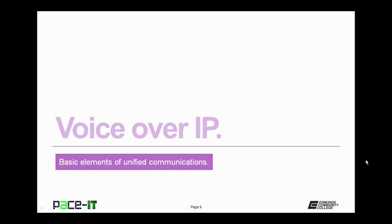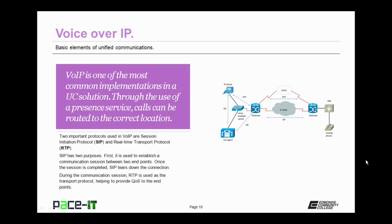Now let's move on to voice over IP. VoIP is one of the most common implementations in a unified communication solution. Through the use of a presence service, calls can be routed to the correct location for where the user is. Two important protocols used in voice over IP are Session Initiation Protocol, SIP, and Real-time Transport Protocol, RTP. SIP has two purposes: first, it is used to establish a communication session between two endpoints; and second, once the session is completed, SIP tears down that connection between the two endpoints. During the communication session, RTP is used as the transport protocol, helping to provide quality of service through COS to the endpoints.